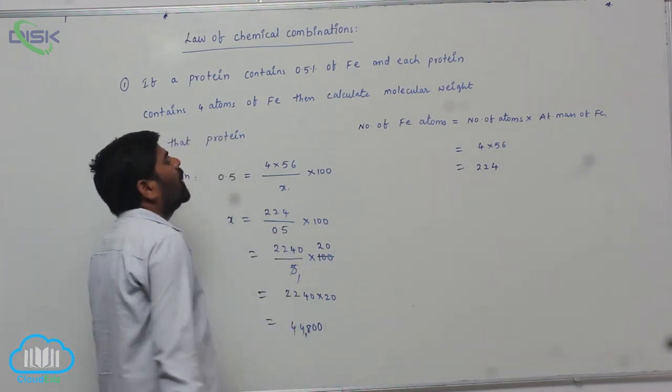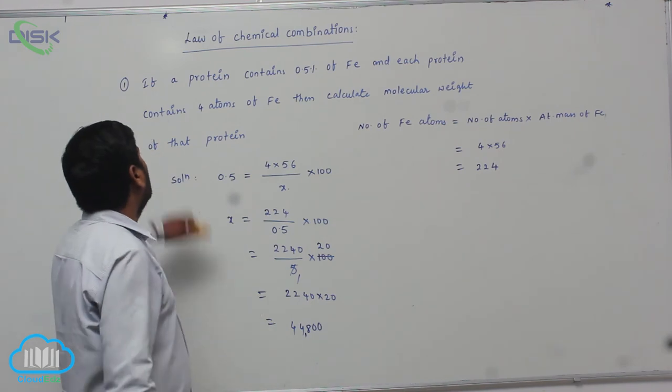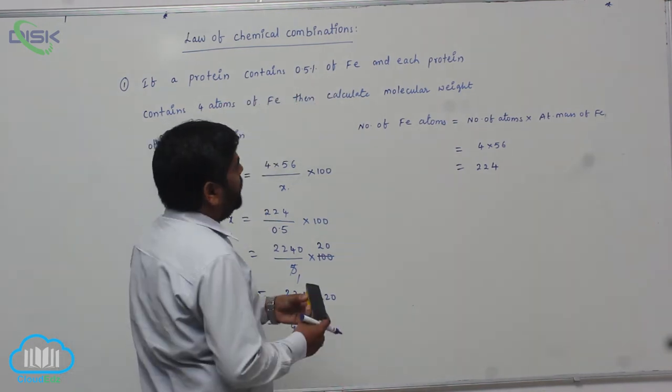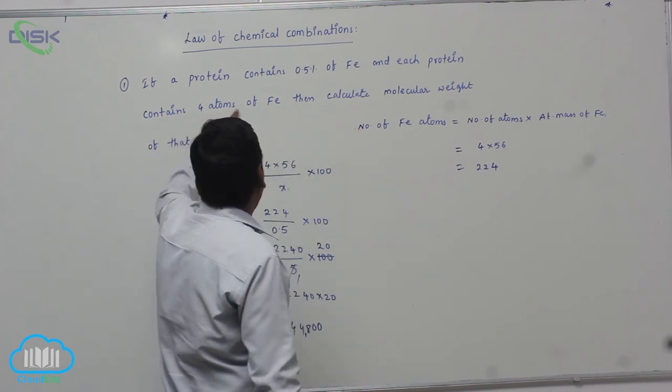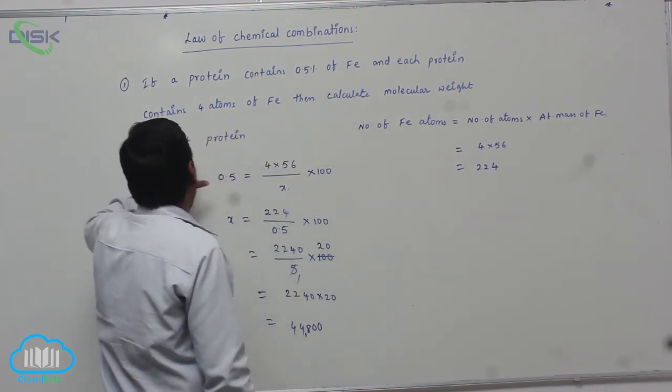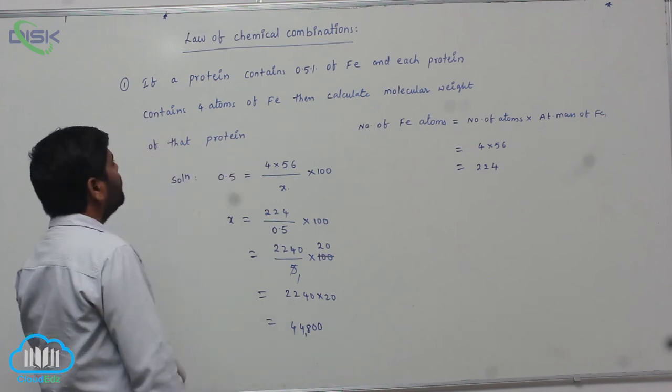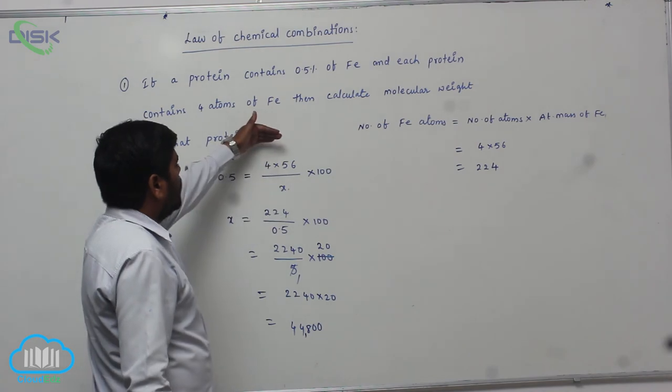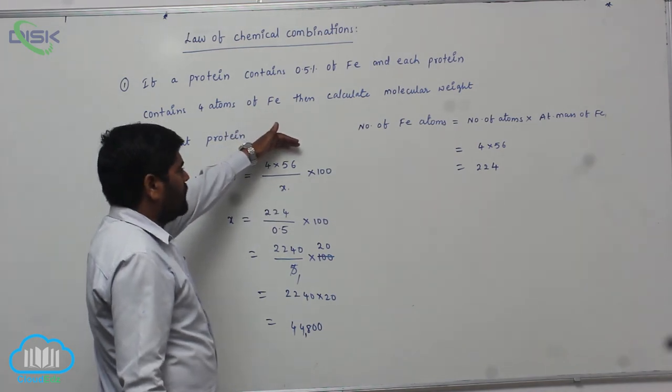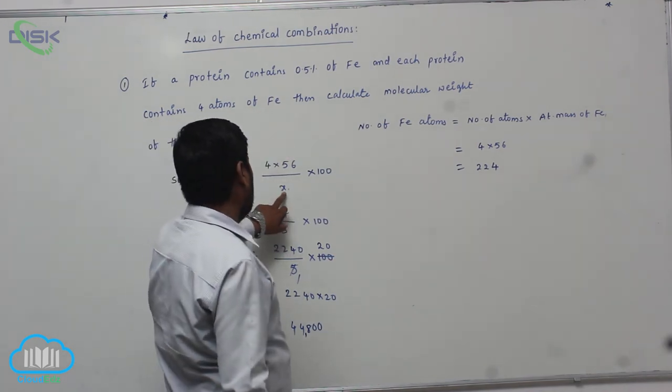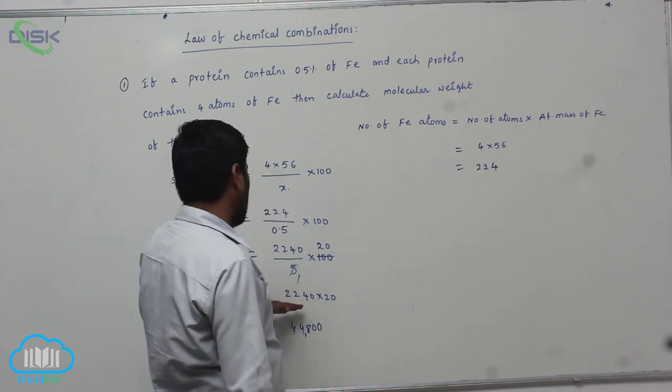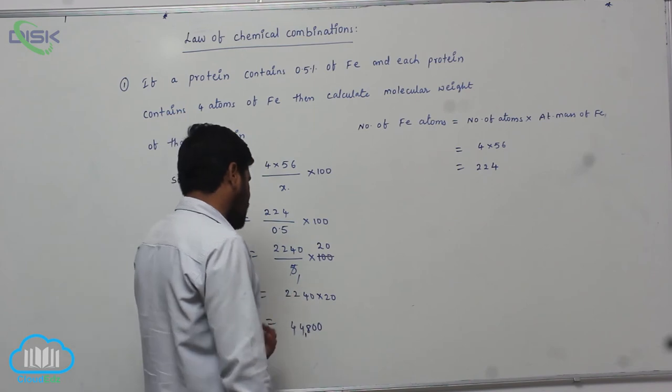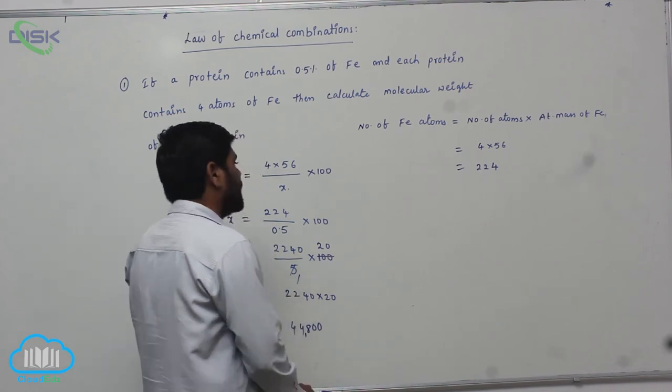This is the mass of the protein. If a protein contains 0.5% of iron and each protein contains 4 atoms of iron, then calculate the molecular weight of that protein. This is 0.5 percentage, so weight of iron by molecular weight of protein times 100. The answer is 44,800.